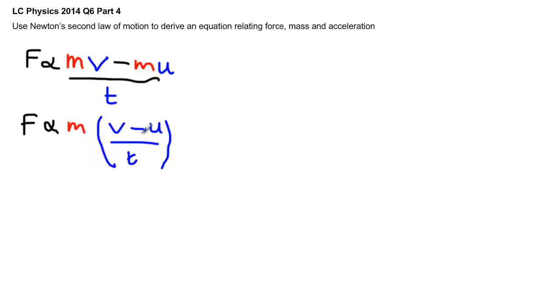Now this V minus U over T, that in fact is the definition of acceleration. So A equals V minus U over T. That's the difference in your speeds and how quickly it takes you to do that. I'll leave it up there.